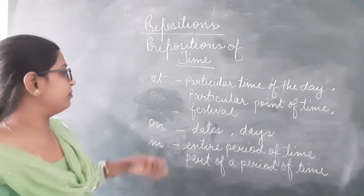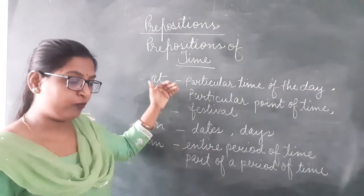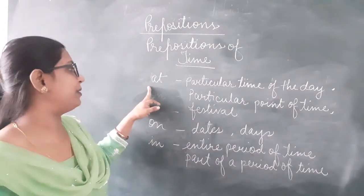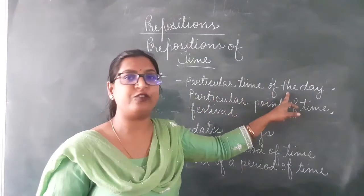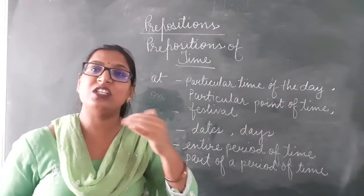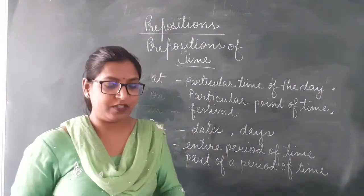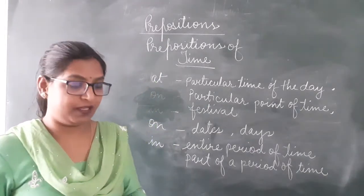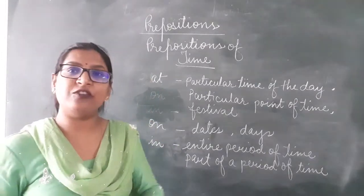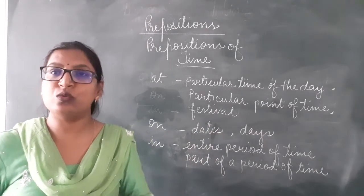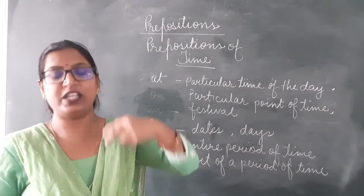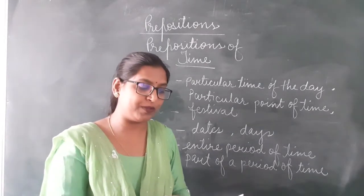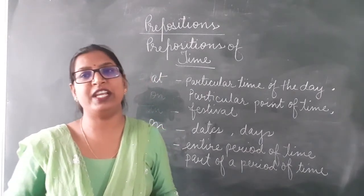Here is a list of some more prepositions of time. The preposition 'at' indicates a particular time of the day — for example, at 7am, at 10am, at 11am. It is also used for a particular point of time, for example, at the beginning of the school year. We also use 'at' for festivals, for example, at Diwali, at Lohri, at New Year, etc.